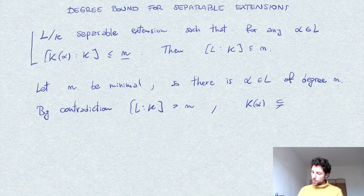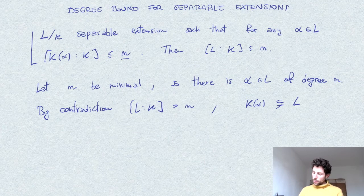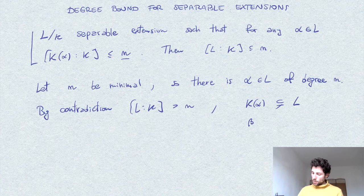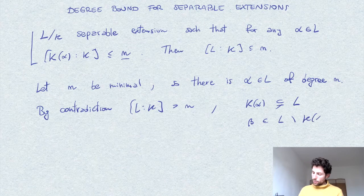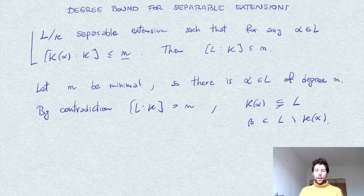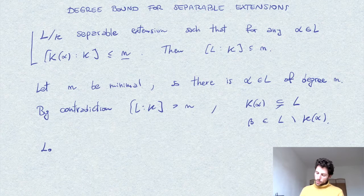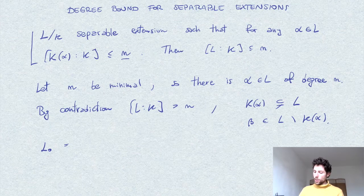So it's strictly contained in L. So we can pick some other element in between the two fields. So we pick beta in L minus k of alpha. And we consider, let us denote by L0, the extension. So we have now an intermediate extension, k of alpha beta.